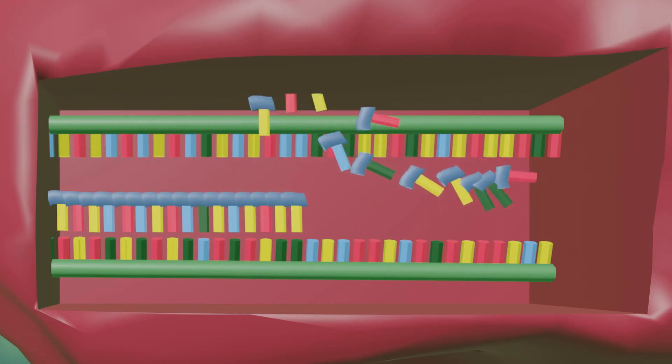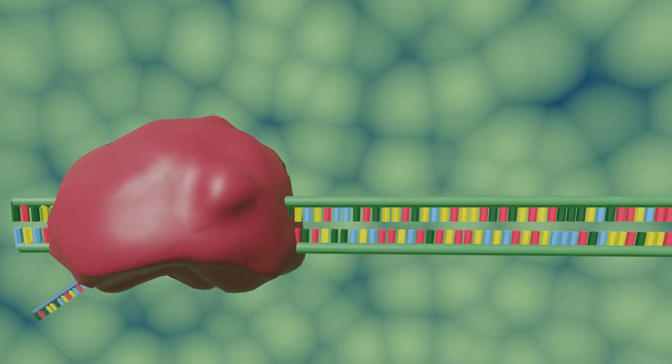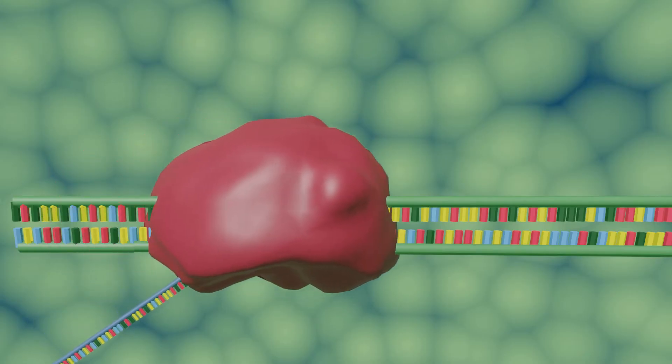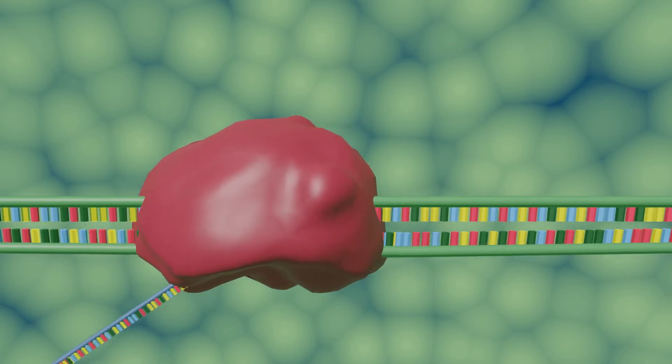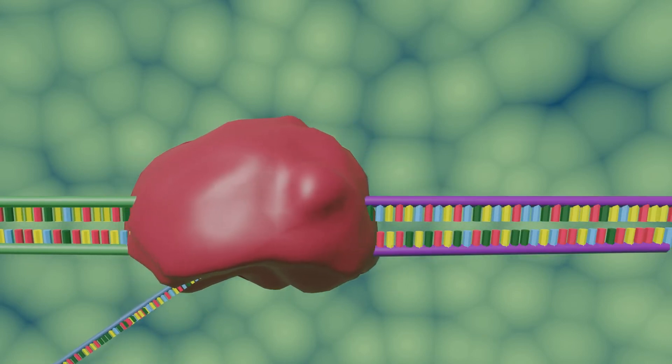Elongation is the addition of nucleotides to the messenger RNA strand, making a chain that grows from five prime to three prime. Sequences of DNA called terminators signal that the RNA transcript is complete.